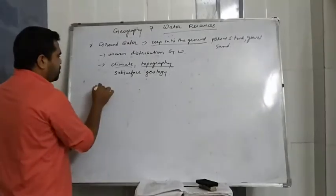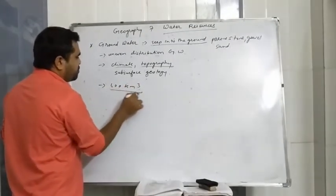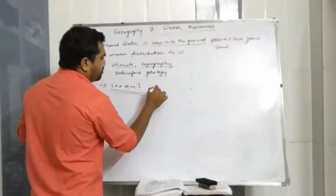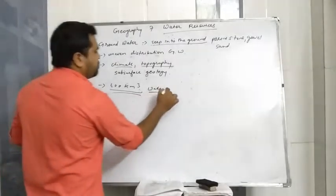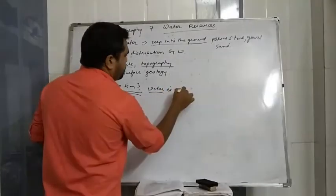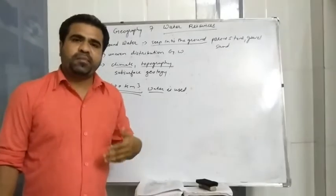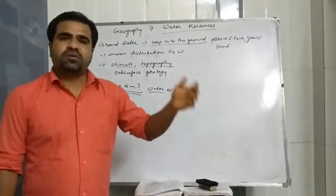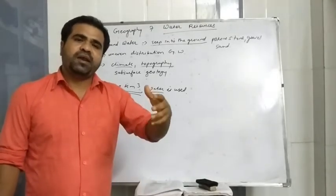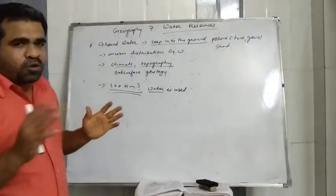So we use the water in the ground. In Bharat, how much water we use? 400 km³ of ground water is used. Because we can't store much water, we don't have so many dams, population is more, use is more, so the water needs to be a resource.